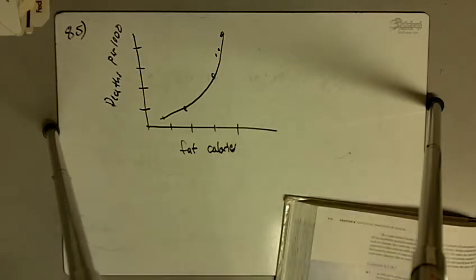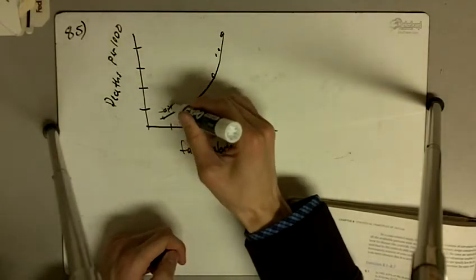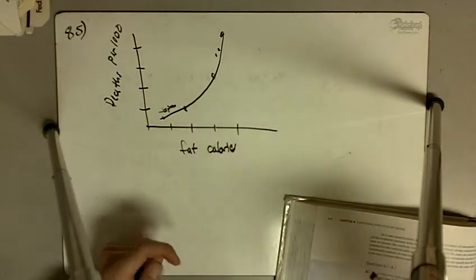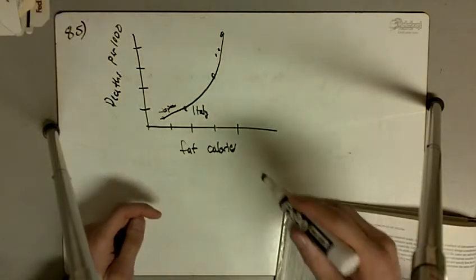Okay, so it shows fat calories and then it says in Japan they don't consume very much fat and their death rate is low. In Italy they consume just a little bit more fat and their death rate is a little bit higher.